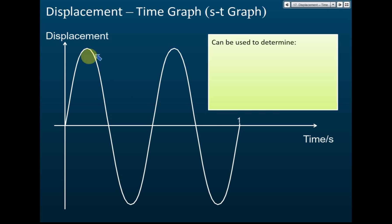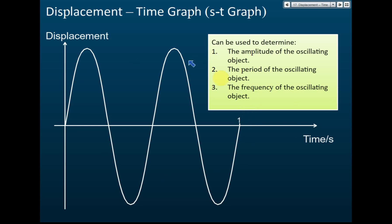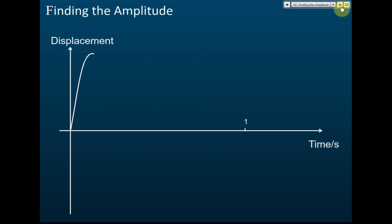The displacement-time graph can be used to determine a few things: the amplitude of the oscillating object, the period of the oscillating object, and the frequency of the oscillating object. These are the pieces of information we can get from a displacement-time graph.